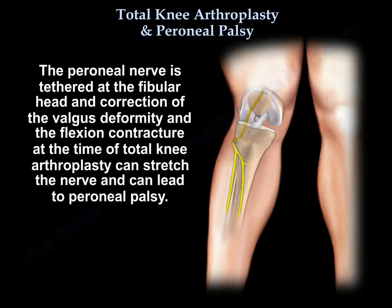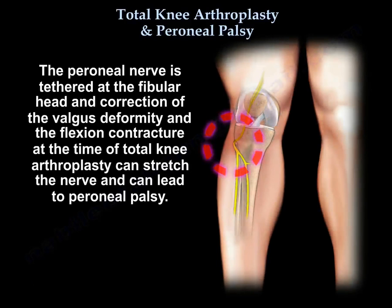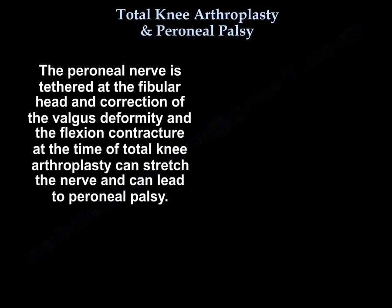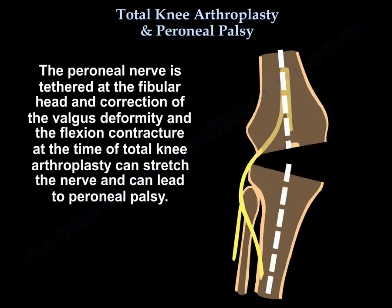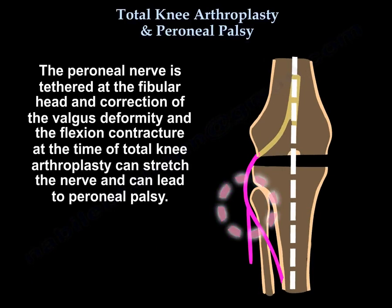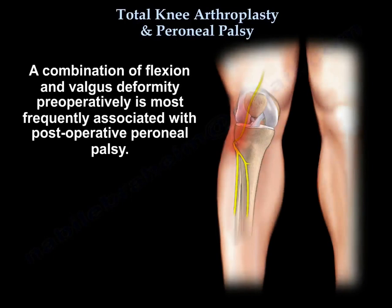The peroneal nerve is tethered at the fibular head, and correction of the valgus deformity and the flexion contracture at the time of a total knee arthroplasty can stretch the nerve and lead to peroneal nerve palsy. The combination of flexion and valgus deformity preoperatively is most frequently associated with postoperative peroneal nerve palsy.